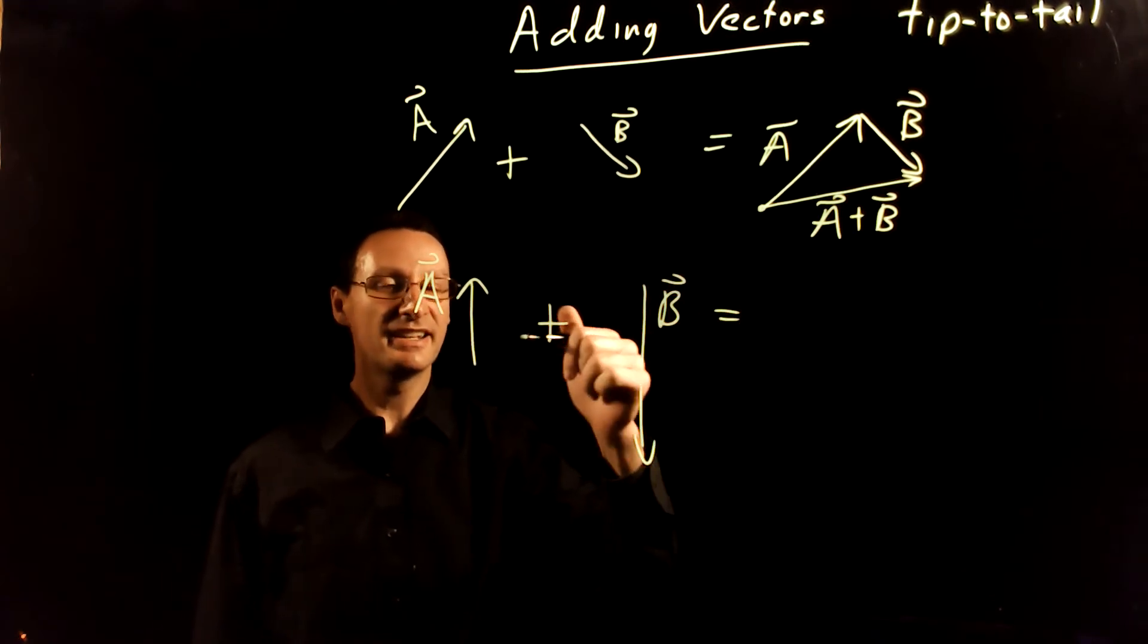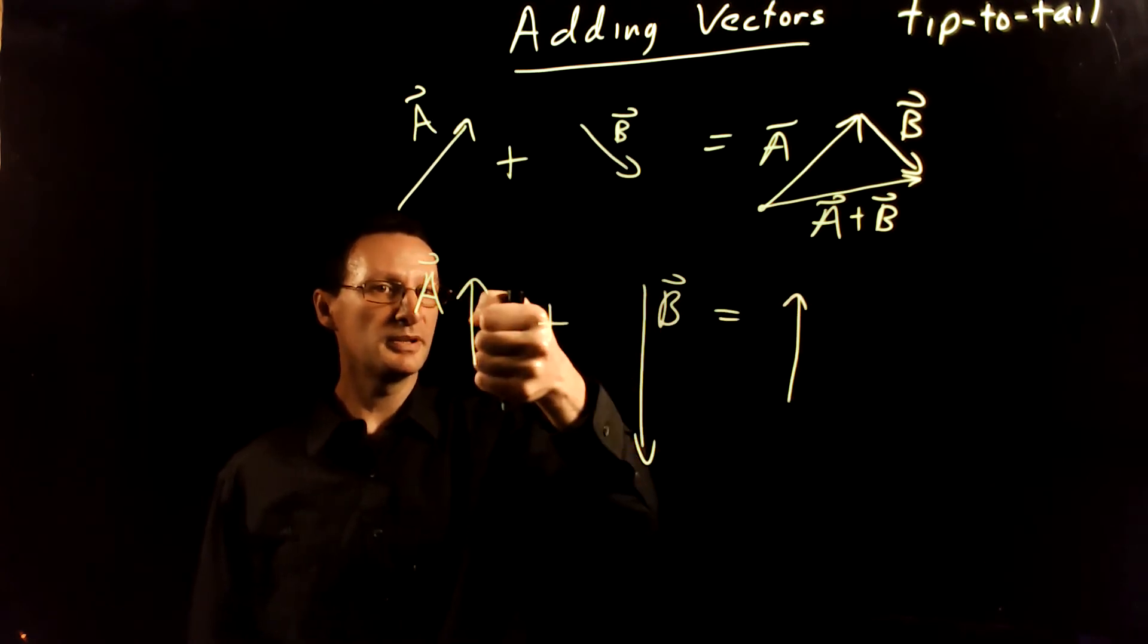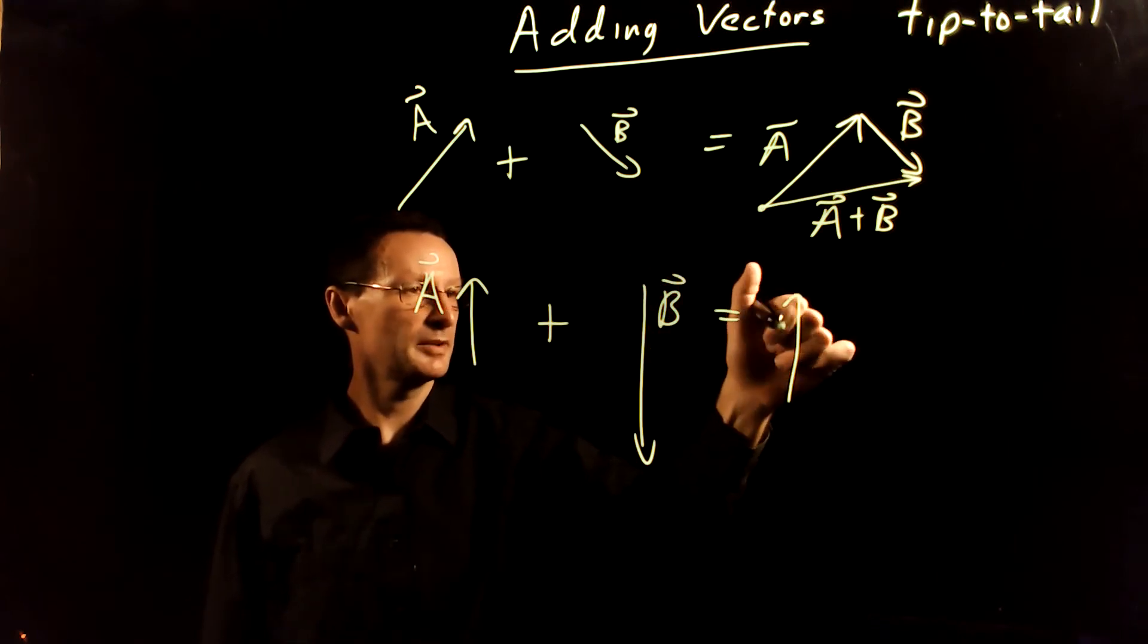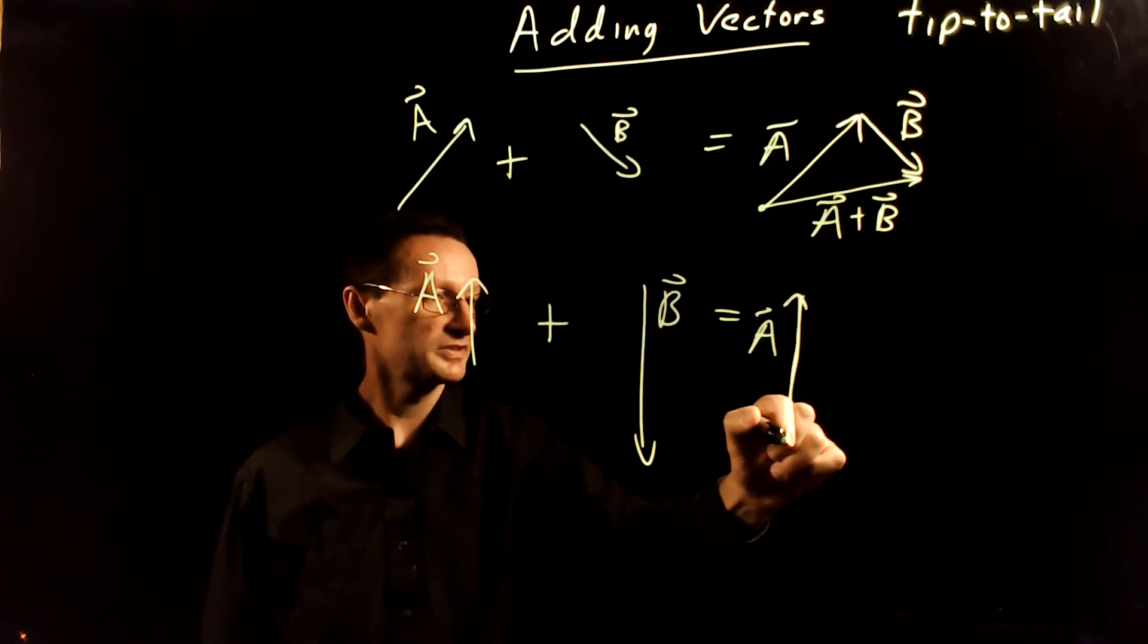Well, you draw A first, and then you take B and put it at the end, the tail of B at the tip of A. So this is A. And then B goes down like that.